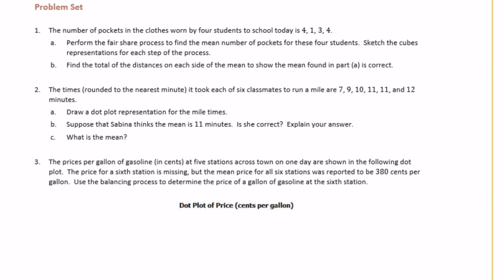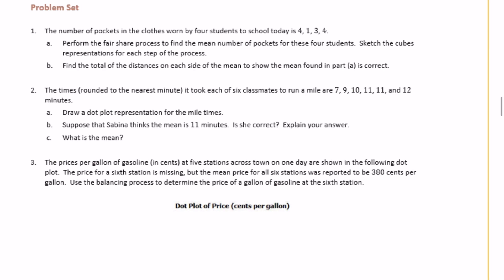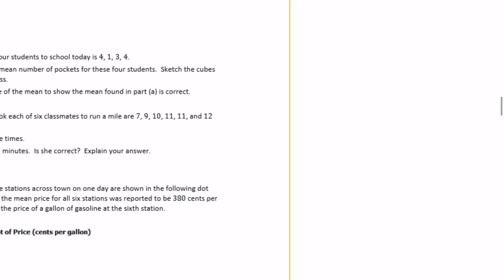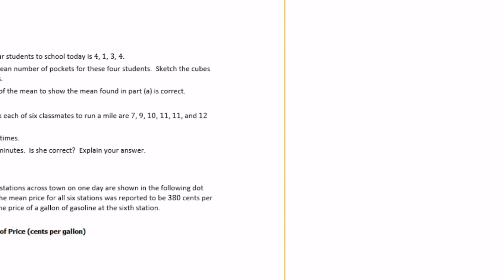6th grade module 6 lesson 7, problem set number one. The number of pockets in the clothes worn by four students to school today is four, one, three, and four. Perform the fair share process to find the mean number of pockets for these four students and sketch the cube representations for each step. So we have four, one, three, and four, and we need to do the fair share process to share the cubes.